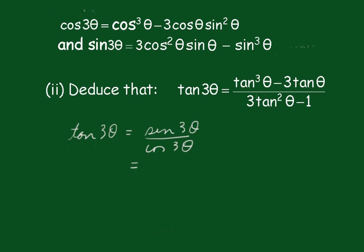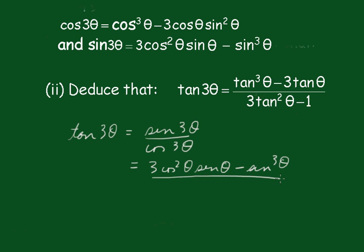So we'll replace that with what we've got: (3cos²θ sinθ − sin³θ) all over (cos³θ − 3cosθ sin²θ).